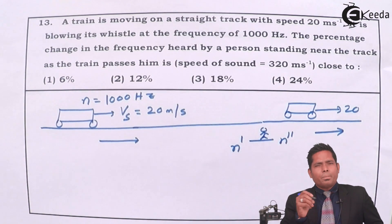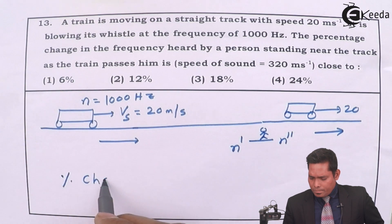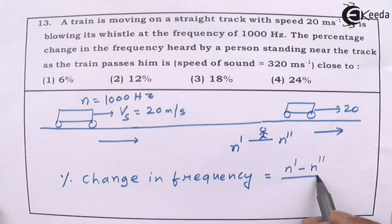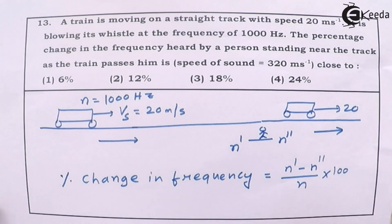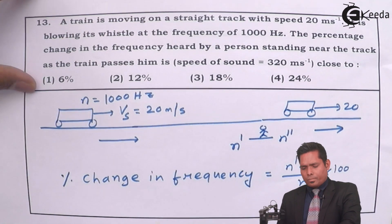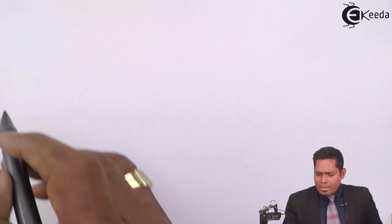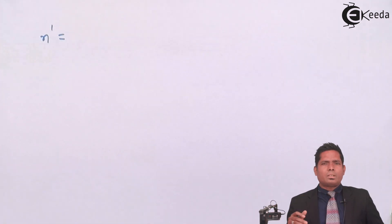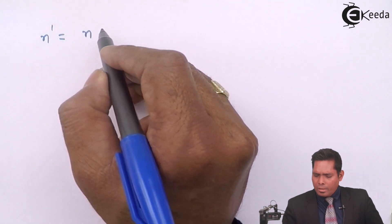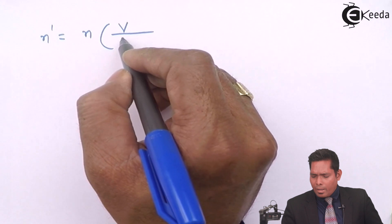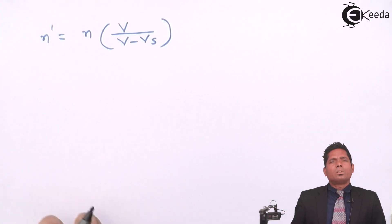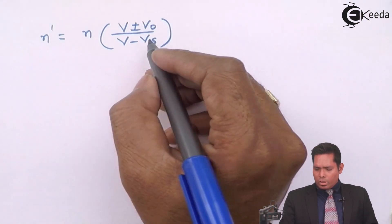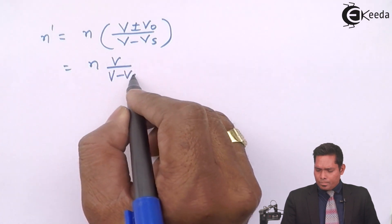To find the percentage change in the frequency, the formula is: n-dash minus n-double-dash, divided by n, into 100. To find n-dash, this is the case when the observer is stationary and the source is moving towards the observer. So the formula becomes: n-dash = n × v / (v − v_s), because the velocity of the observer is 0. So this equation becomes n × v / (v − v_s).